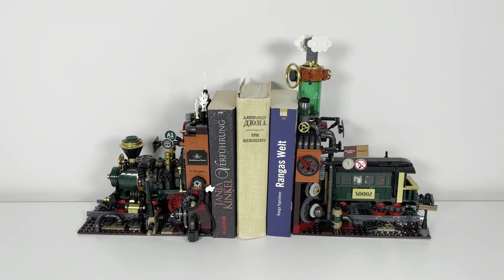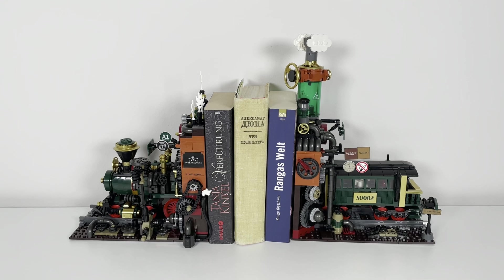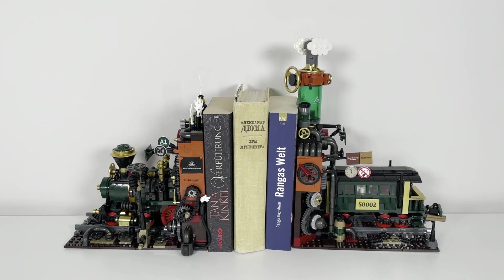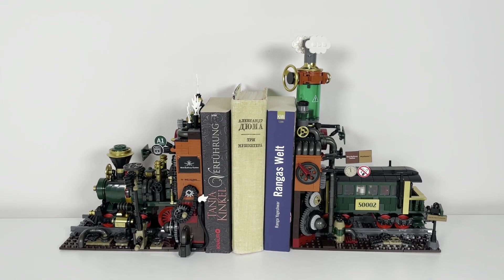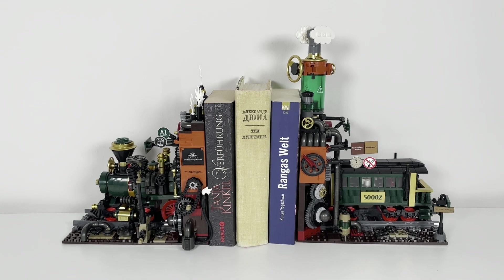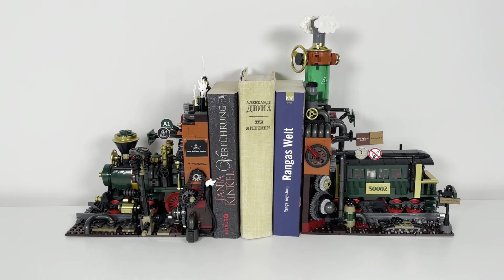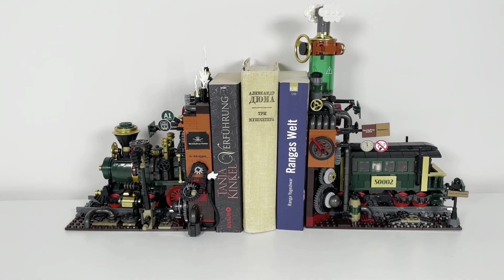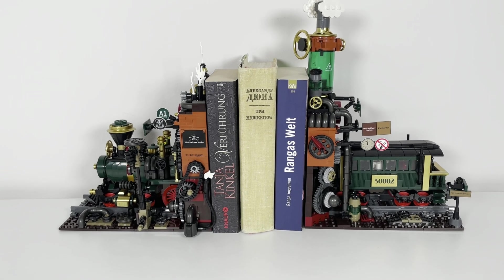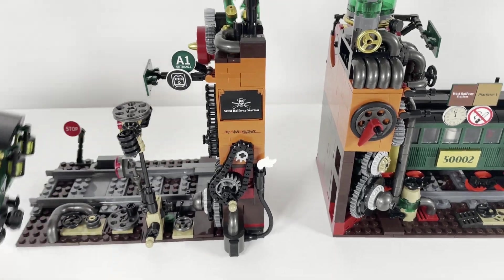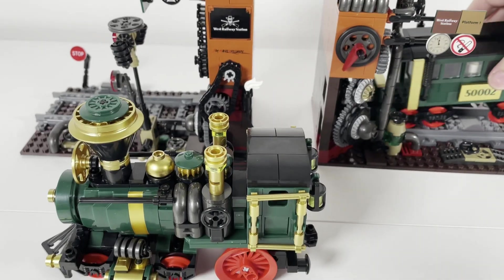I grabbed some books and placed them between the two bookends to visualize how it looks. As you can see, it holds the books in place and they are not moving at all. Of course, it takes some space and you might not place high books at the end, since those parts are not 100% plain.